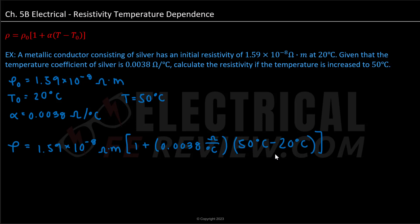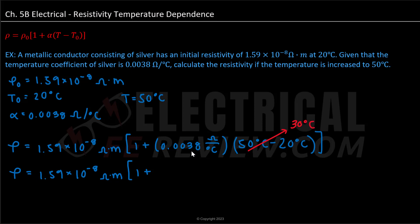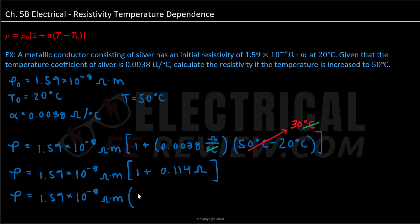As a rule of thumb, we need to first solve for what we have inside our brackets and parentheses. Looking inside our parentheses, we can first subtract 50 minus 20 degrees Celsius, which gives us 30 degrees Celsius. Multiplying this by our temperature coefficient gives us 0.114, since the Celsius unit cancels out. We can now add 1 plus 0.114, which gives us 1.114.